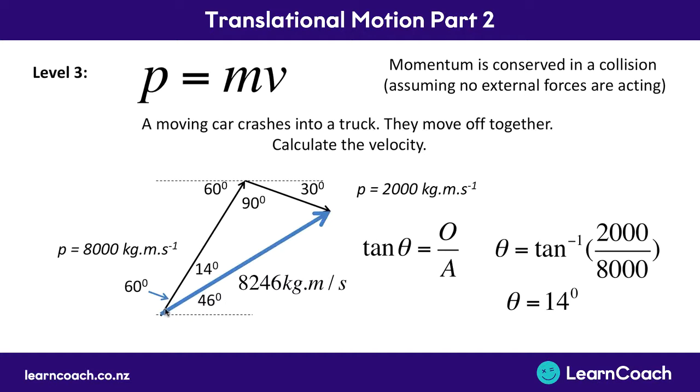So using all of our trigonometry, and this is a hard excellence level question by the way, so just try and keep up with what's going on. So your momentum before they collide, because you've added their two momentums beforehand, is 8,246, 46 degrees above the horizontal.